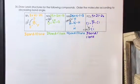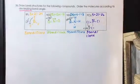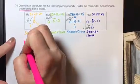So if we are putting the atoms in decreasing bond angle, that means from largest bond angle to smallest, they're actually already in that order.